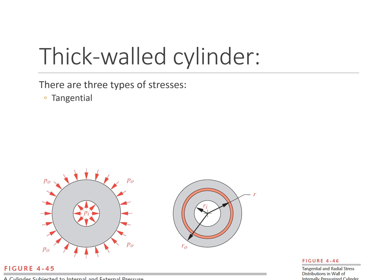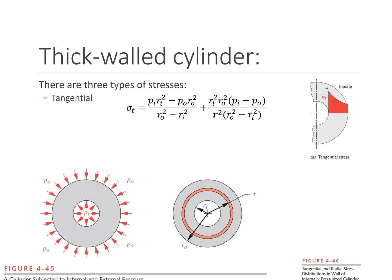Let's look first at the tangential stress. The tangential stress is given by a constant term — you can see the inside pressure, inside radius, outside pressure, outside radius — as well as a term that has r squared. The important part of this equation is this r term. As r goes from r_i to r_out, we'll have a profile of tangential stresses. Notice the maximum tangential stress occurs at the inside surface, and the minimum occurs at the outside surface.